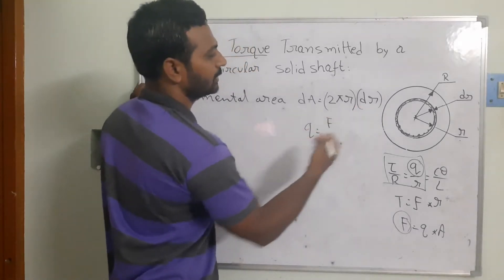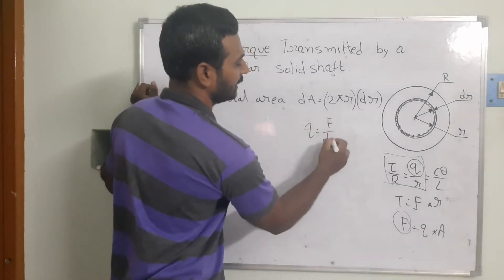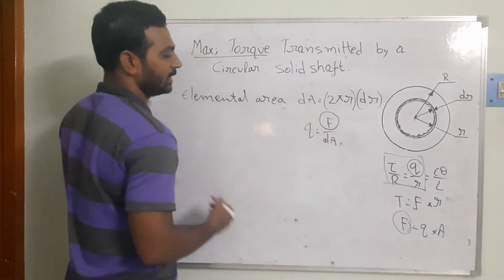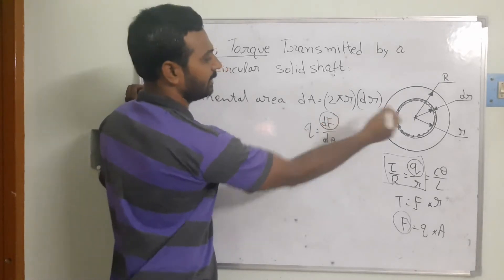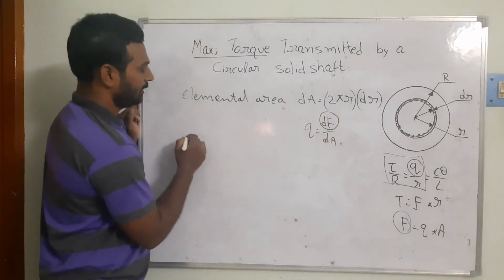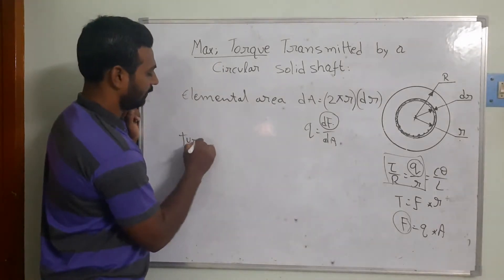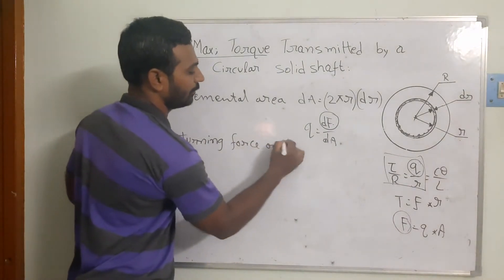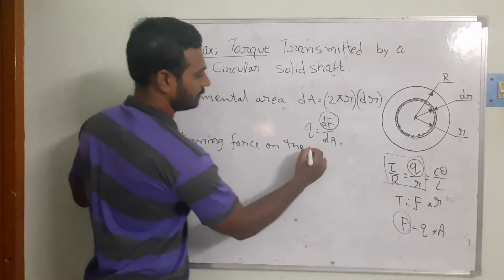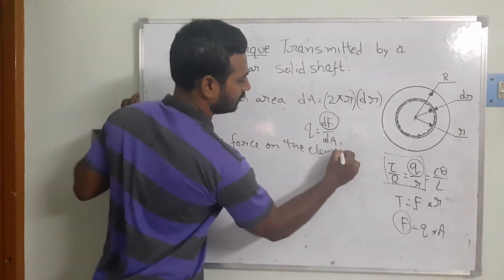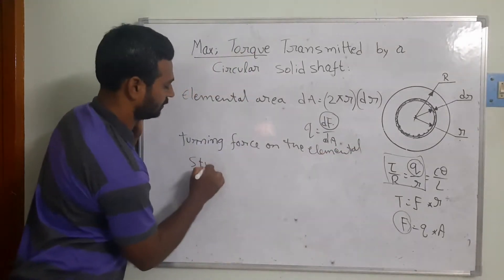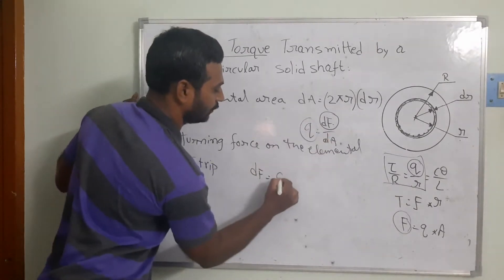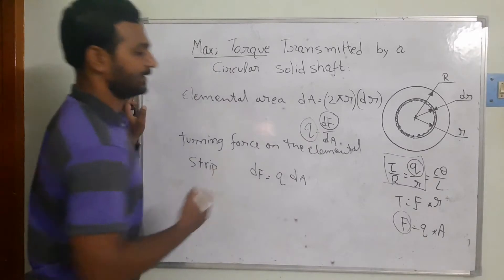The shear stress q equals the turning force f divided by the turning area. I want to find out force f, which I am calling df — the turning force on the elemental strip. So df equals q times dA.